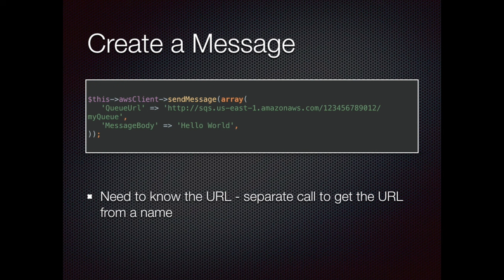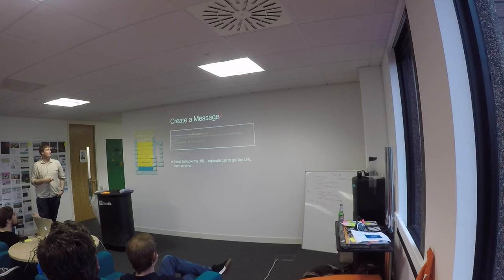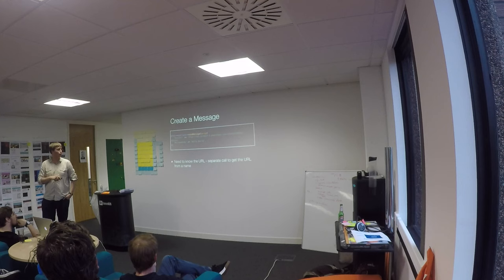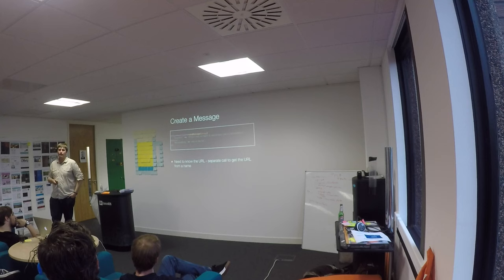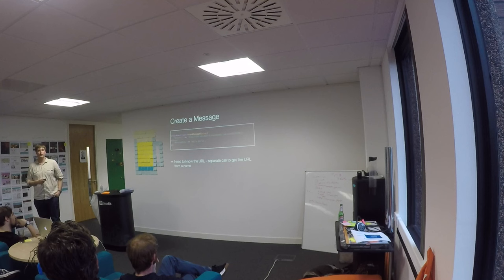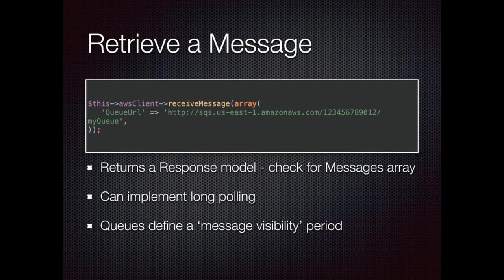Creating a message - I said I have two bits of code, here's the first one. You use the Amazon Web Services client, pass it the queue URL and then the message body - I've just put a string of 'hello world' here. That's it for creating a message; at that point the message appears on your queue. What you do need to know is the queue URL, which is based on your Amazon region, a unique identifier for your account, and the queue name. If you don't know the queue URL, you can make an API call to look it up from just the name, though you may need to do two requests.